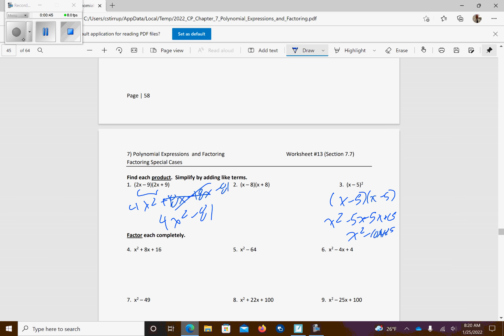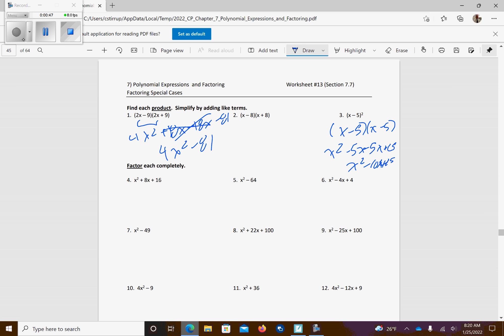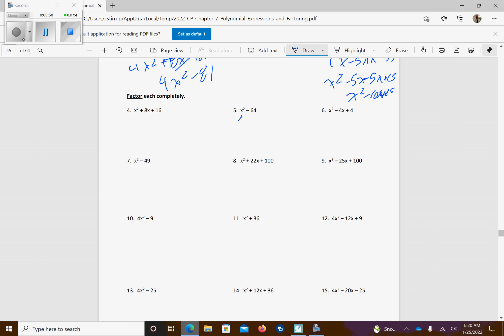Okay, factor completely. So this is called the difference between squares, so you would have learned about this in your lesson. This is a perfect square, perfect square, so that's going to be x minus 8 and x plus 8. Notice you have one positive sign, one negative sign.